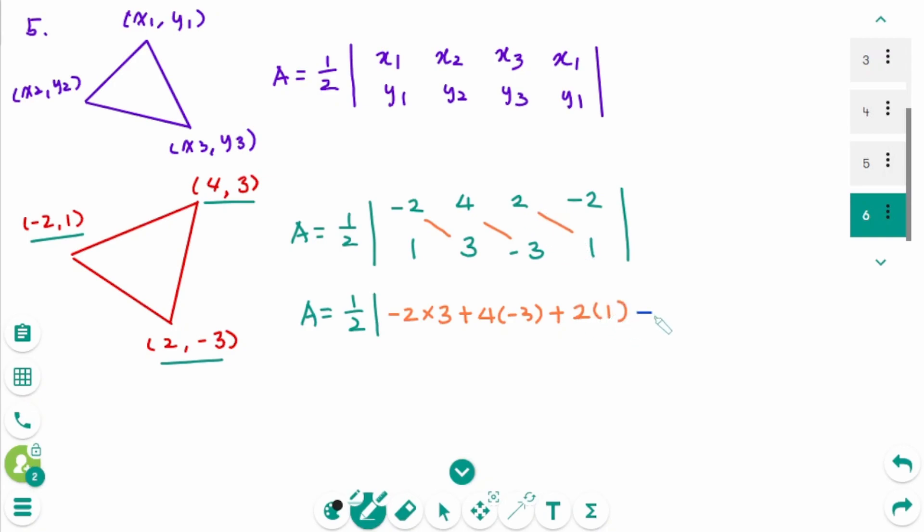Minus the other way, 4 times 1, plus 2 times 3, plus minus 2 times minus 3.